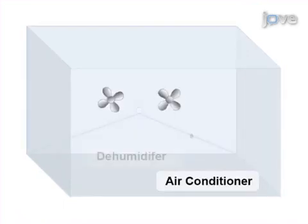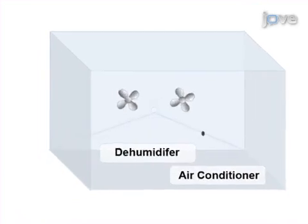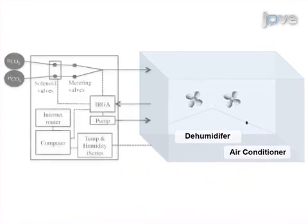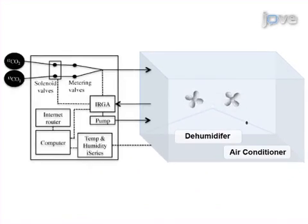This is accomplished by first constructing an airtight chamber for plant growth. The second step is to control temperature, humidity, and carbon dioxide levels in the chamber to maintain suitable growing conditions for the plants.